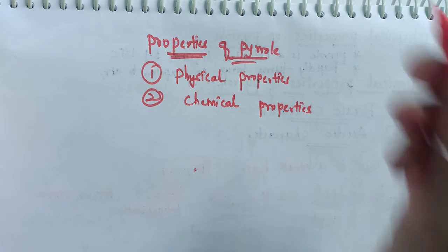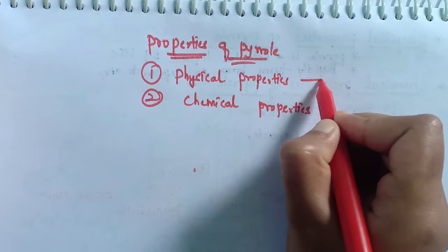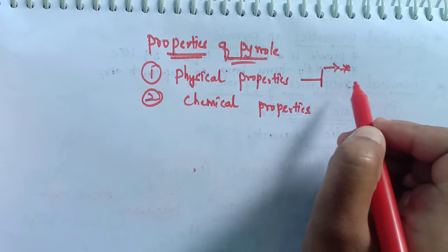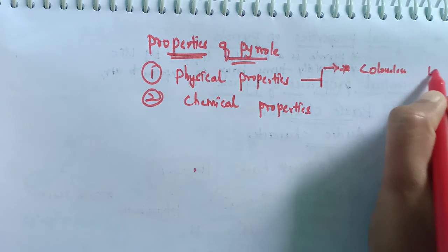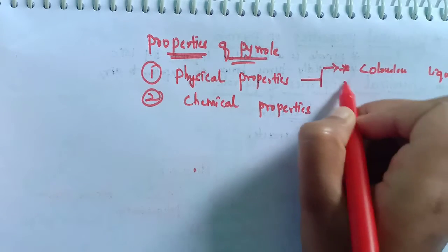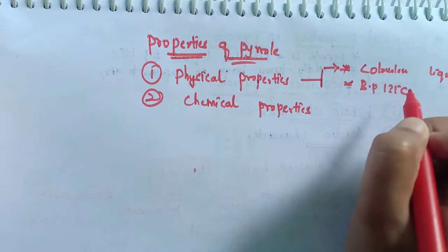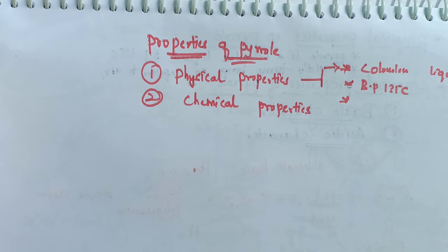We know that pyrrole is a 5-membered ring where one of the carbons is replaced by nitrogen. Coming to the physical properties: the first point is that pyrrole is a colorless liquid. Its boiling point is 131 degrees Celsius.